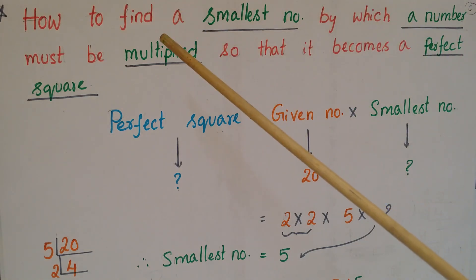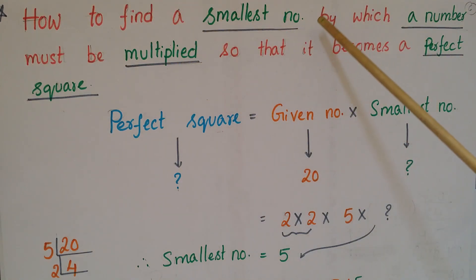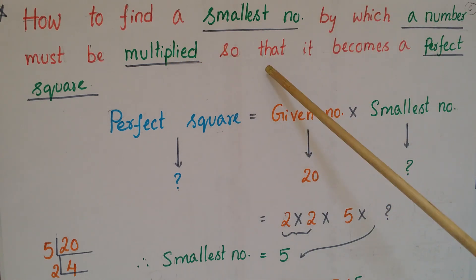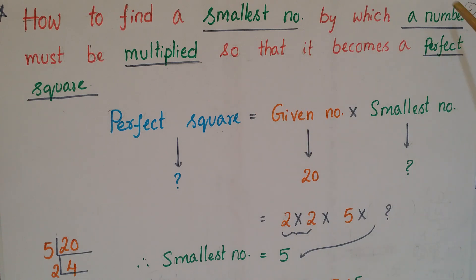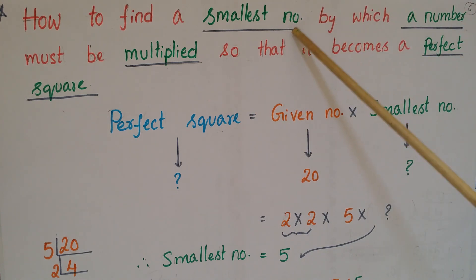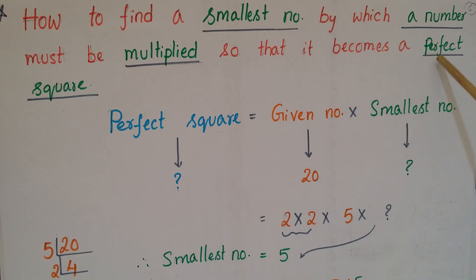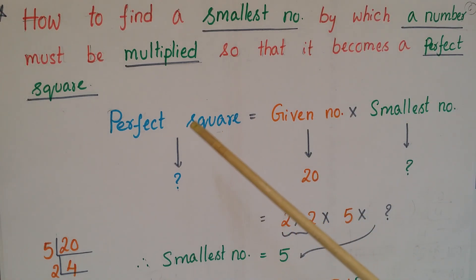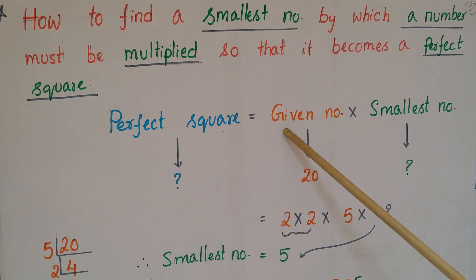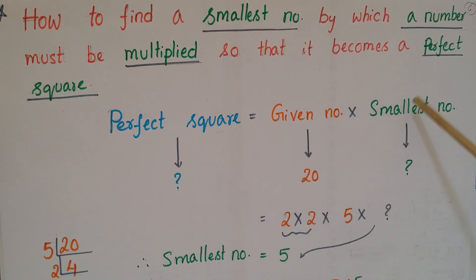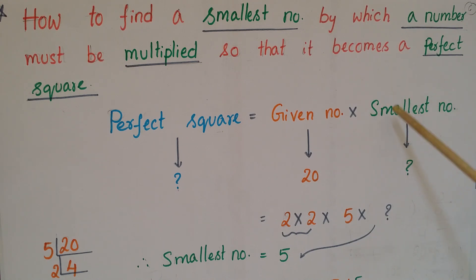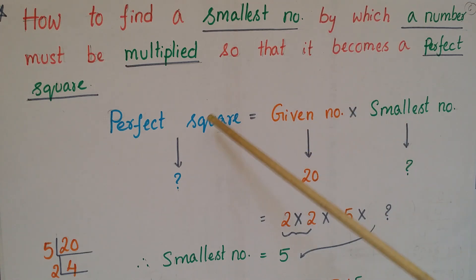Hello everyone. Today I am going to tell how to find the smallest number by which a number must be multiplied so that it becomes a perfect square. We can write this as: perfect square = given number × smallest number. First we calculate the smallest number, and once you multiply it with the given number we will get the perfect square.